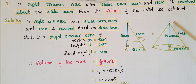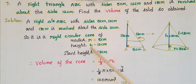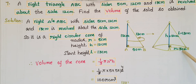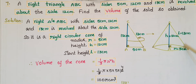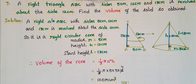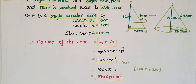If you revolve this triangle about side AC, it becomes a solid right circular cone. Here AC is the height of this right circular cone, so h is equal to 12 centimeters. The base radius r is equal to 5 centimeters, and the slant height l is equal to 13 centimeters.